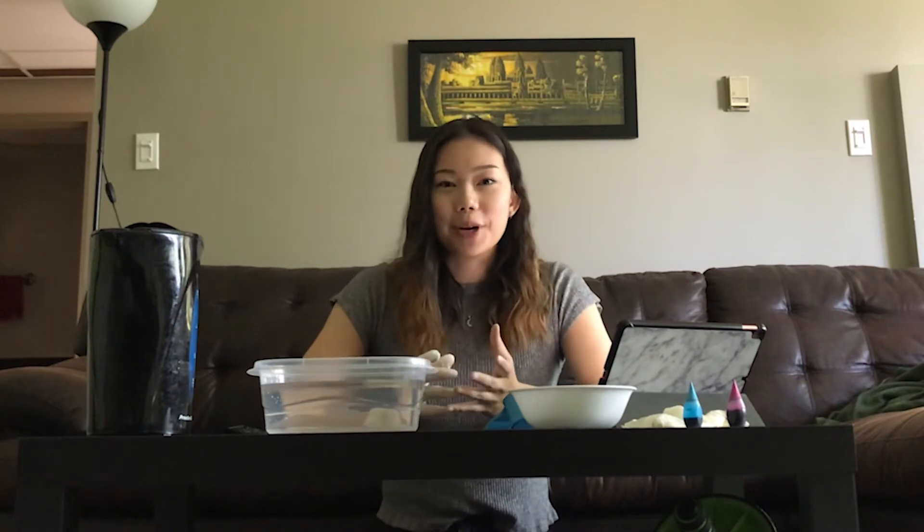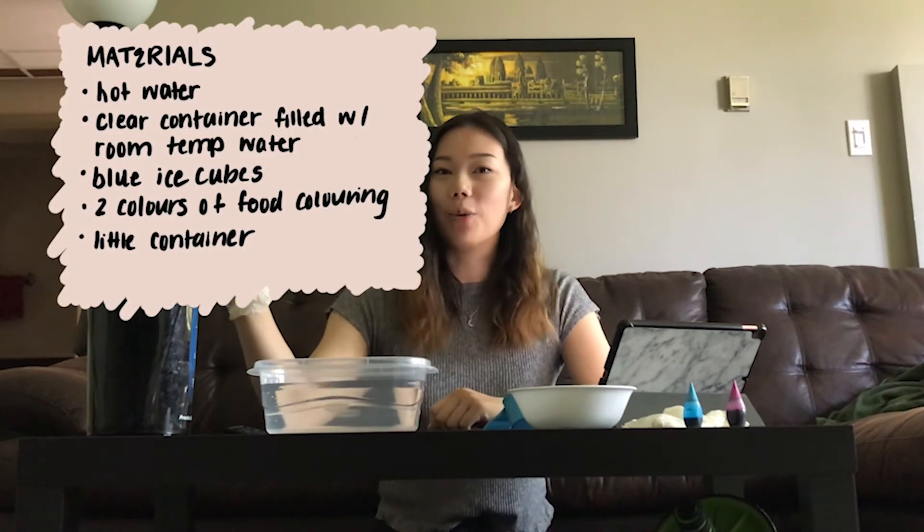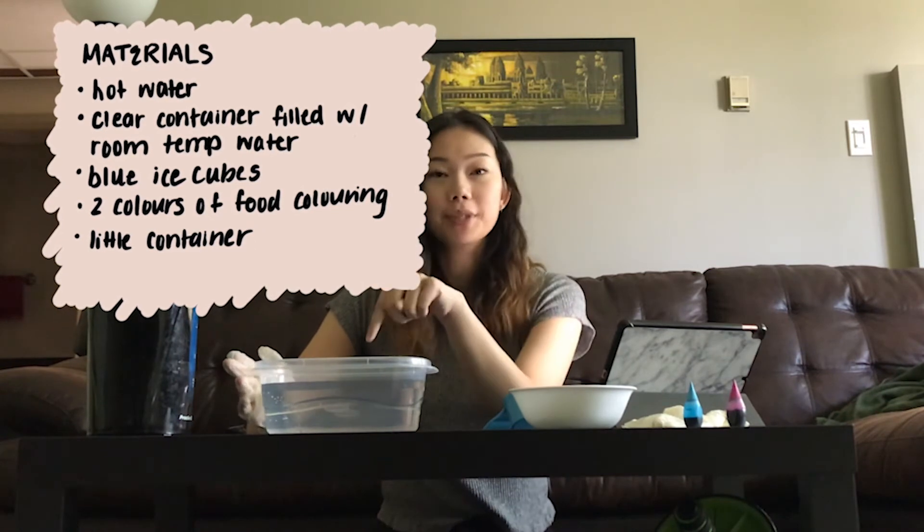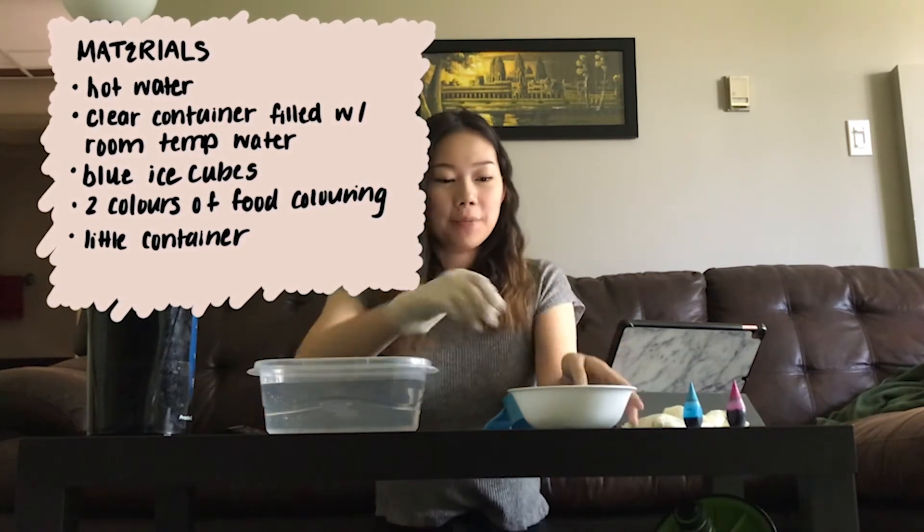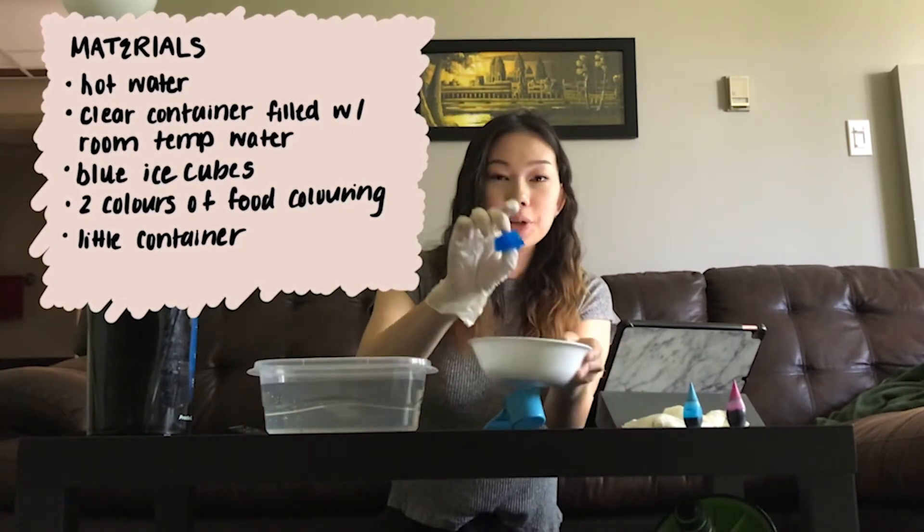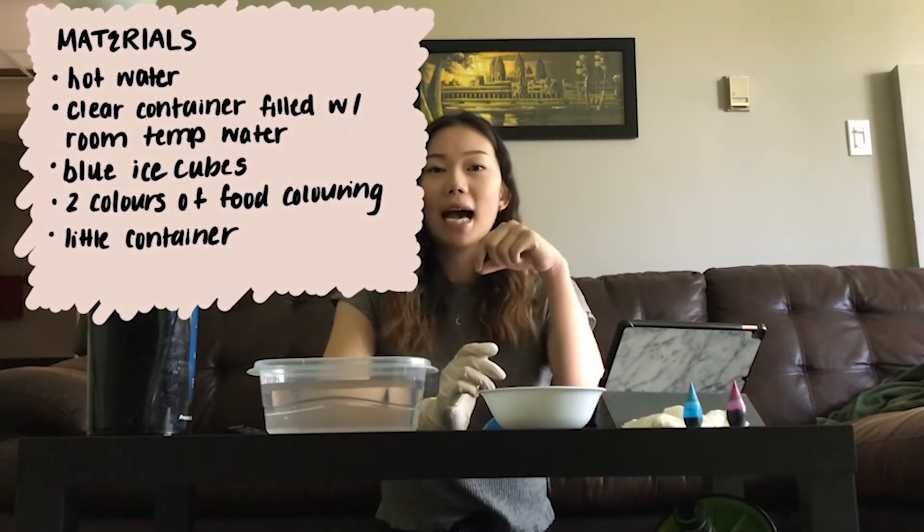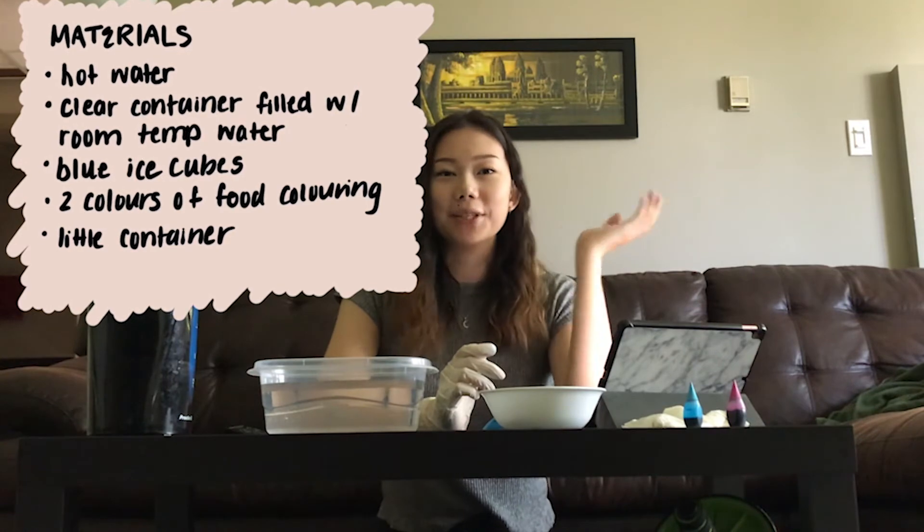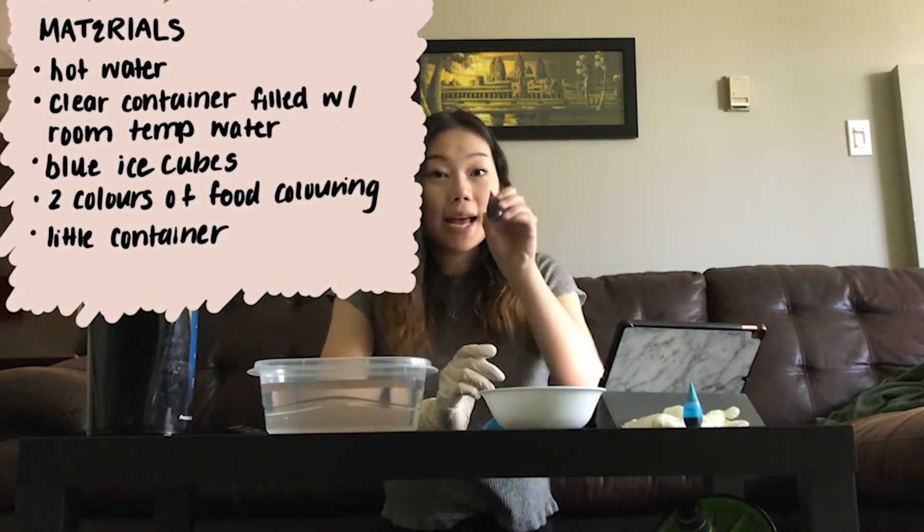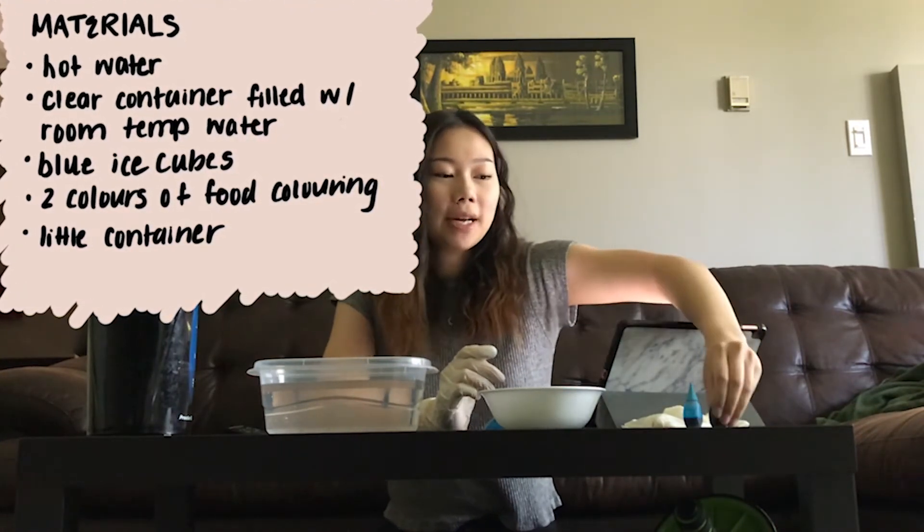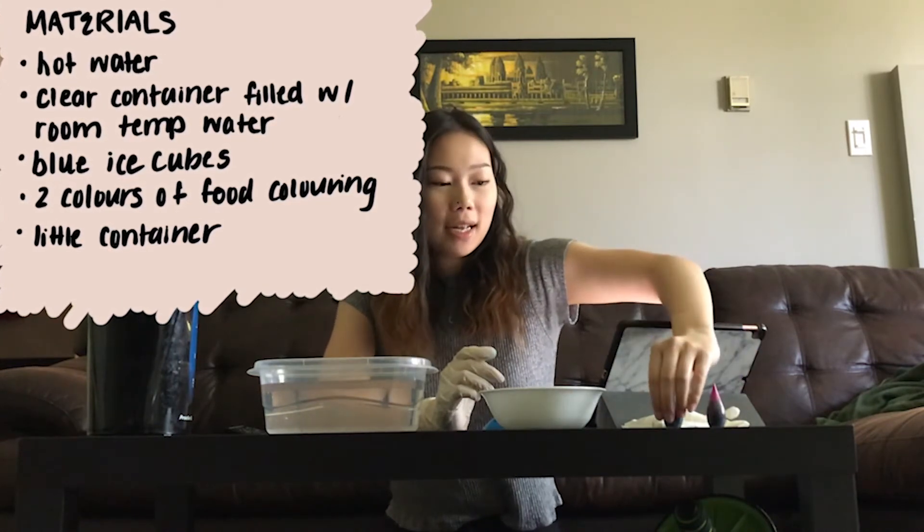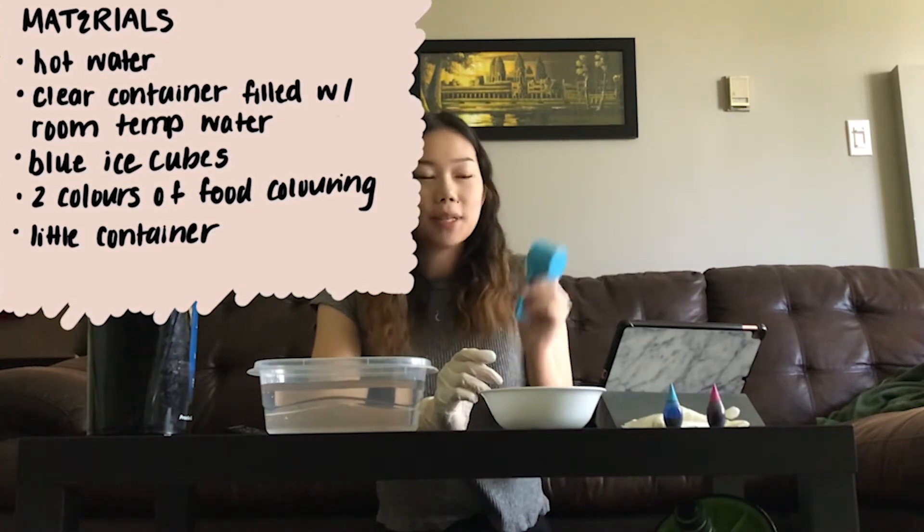For our first experiment you're going to need some hot water, a clear container, some room temperature water. You're going to have to make some blue ice cubes the night before. So all I did was put some blue dye and some water and freeze the ice cubes overnight. You're going to need some red or pink food coloring, some blue food coloring, and a little container of some sorts.